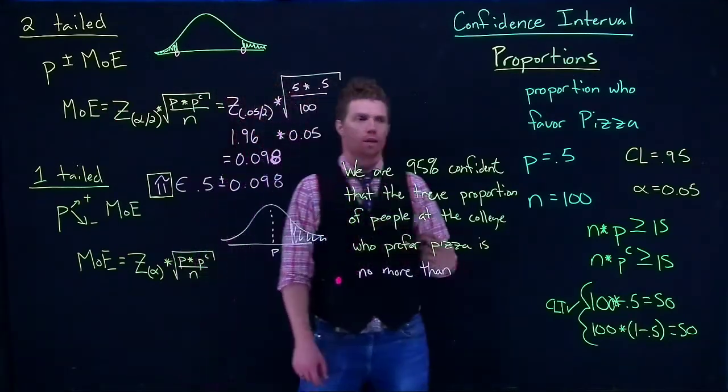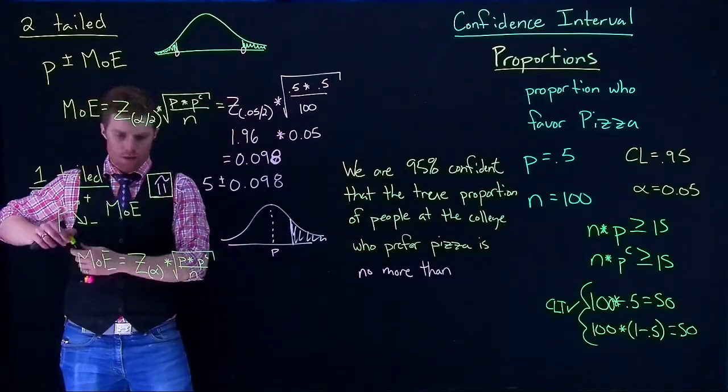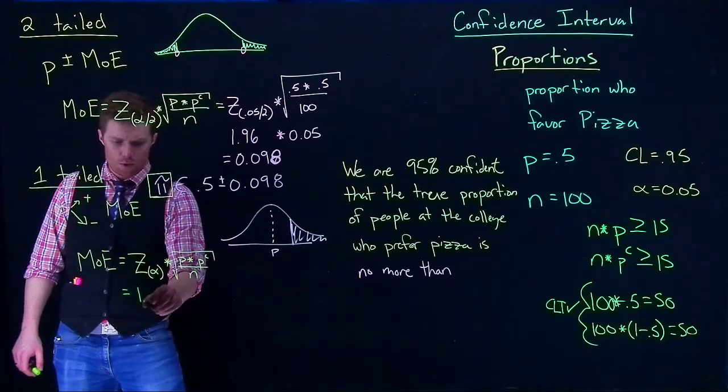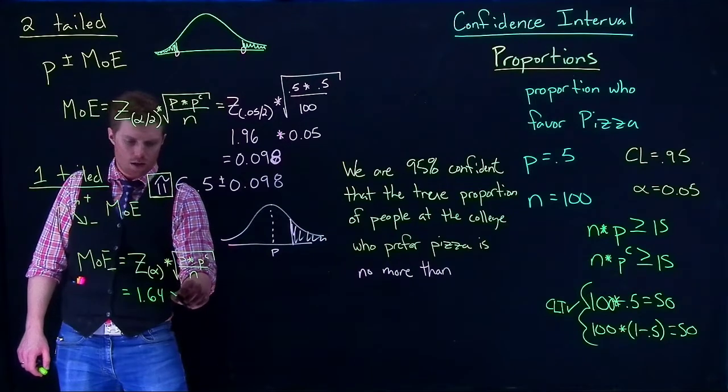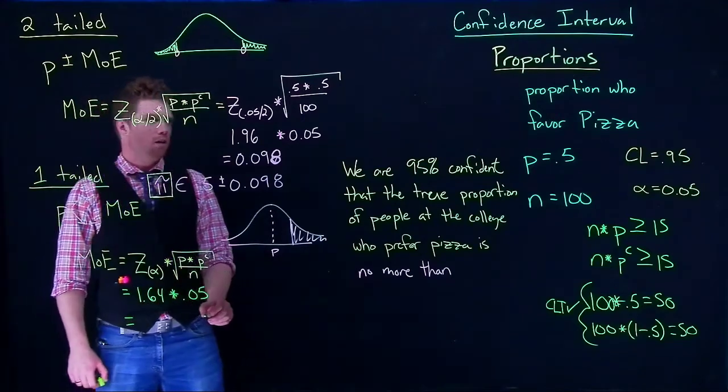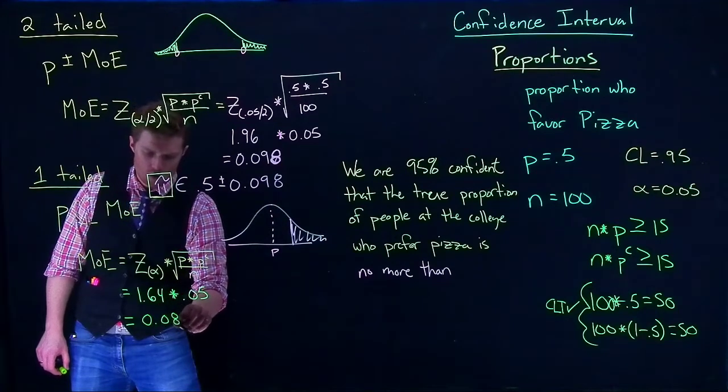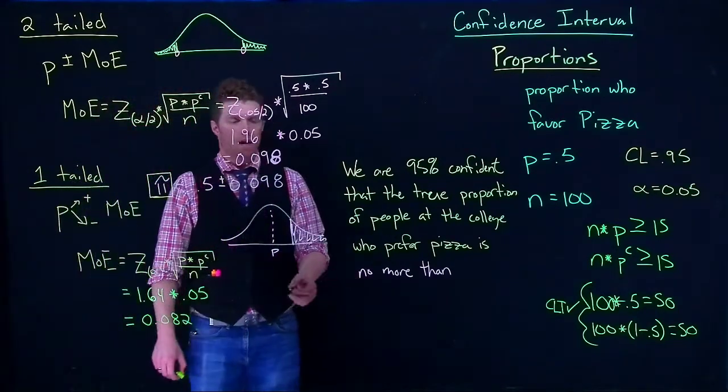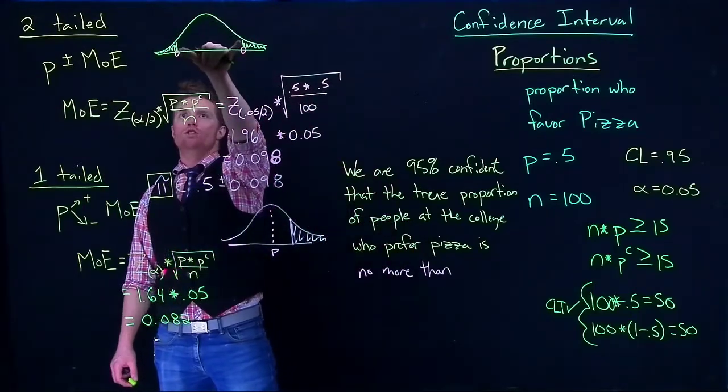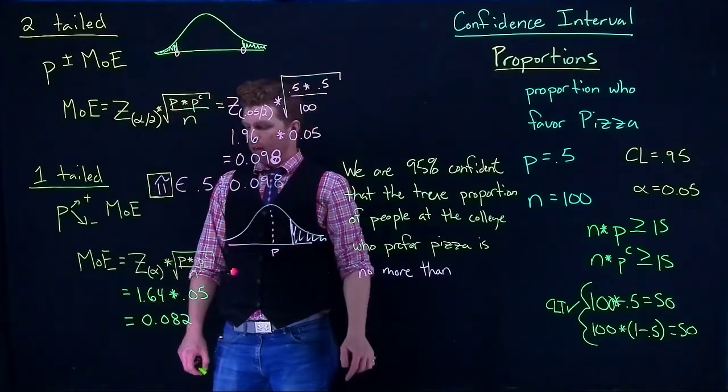Once again, we need to use our software to answer it. But when we answer this, or when we actually calculate it, it equals 1.64. We multiply that by 0.05, and so our margin of error here is going to be equal to 0.082. It's a little bit smaller, and that should make sense, because here we threw our error off to two sides and we have to go a little bit further. Over here, we threw it all to one side, and so we don't have to go quite so far for that error term.